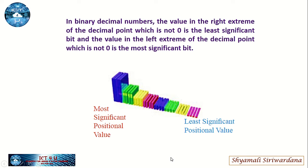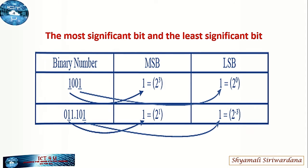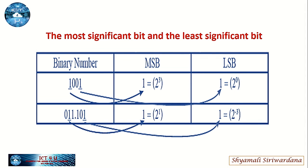The value at the left extreme which is not zero is the most significant bit. Now here are the examples. For the least significant positional value and most significant positional value in binary decimal numbers: the value at the right extreme of the decimal point which is not zero is the least significant bit.